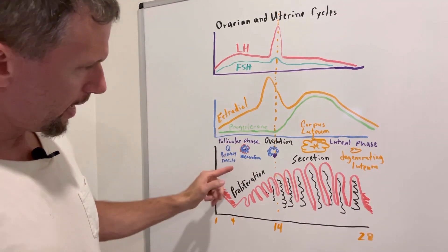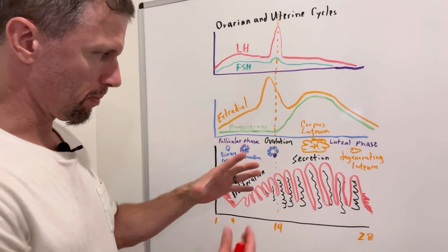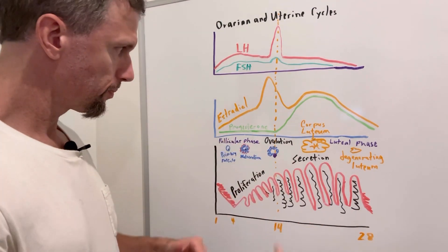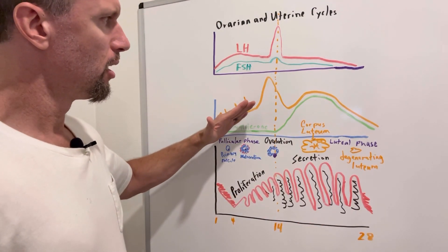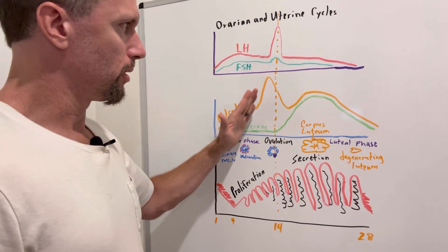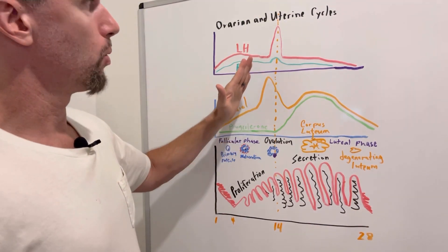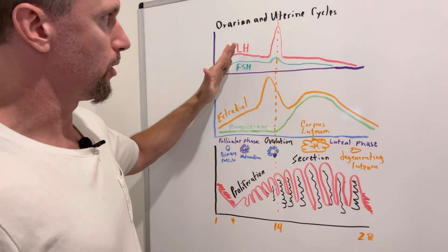And you can see it's rising because we have more of these granulosa cells and maturation of all these different follicles. And they're all producing this estrogen. And as estrogen starts to, it hits a certain point and then it precipitously rises, and that will cause a positive feedback with luteinizing hormone.